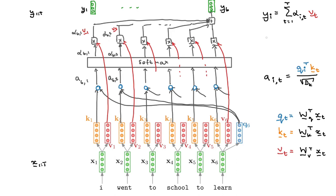The dot product is computed as the transpose of the query at position I multiplied by the key at position T, giving us our A's. For the alphas, we push through softmax: alpha at time step T for query I is the exponential of the score A_I,T divided by the sum over all time positions of the exponential of the scores A_I,T'. That gives us our softmax scores, which we use to weigh the value vectors to get the output of our self-attention block. Self-attention is one block that forms the core of transformer layers, which we will build up to in the next few videos.